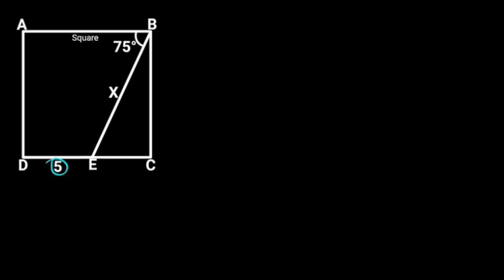In this figure, ABCD is a square. In the square, DE is 5 units and BE is X units. If angle ABE is 75 degrees, find the value of X. Note that this diagram is not drawn to scale.